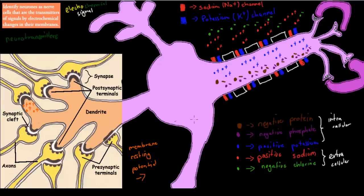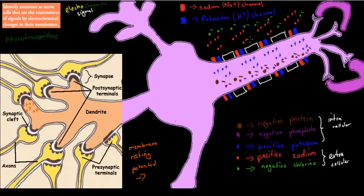I'm going to give a quick demonstration of how all this works. First, we need to look at something called membrane resting potential. Membrane resting potential talks about the difference in positive and negative charge comparing the intracellular — inside the cell — to the extracellular — outside the cell. We need to compare how many charges there are intracellularly compared to extracellularly. When we talk about resting potential, it's roughly minus 70 millivolts.